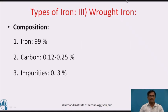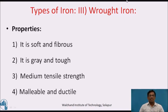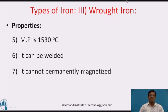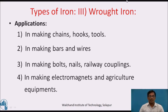Third type of iron is wrought iron. Composition: almost 99 percent iron, carbon 0.12 to 0.25 percent, and the rest, about 0.3 percent, are impurities. Properties: it is soft and fibrous in nature, grey and tough, with medium tensile strength. It is malleable as well as ductile. Melting point is 1530 degrees Celsius. It can be welded but cannot be permanently magnetized. Applications: used in making chains, hooks, tools, bars, wires, balls, nails, railway couplings, electromagnets and agricultural equipment.